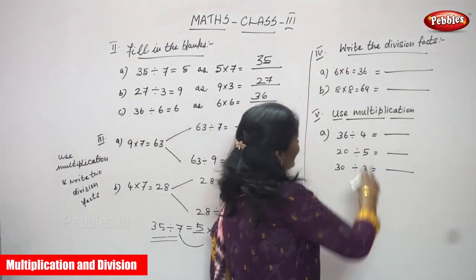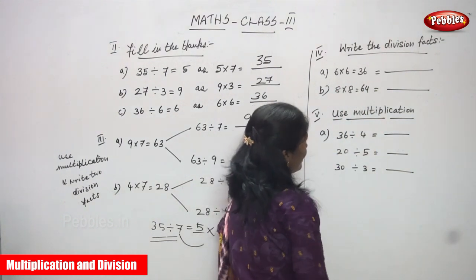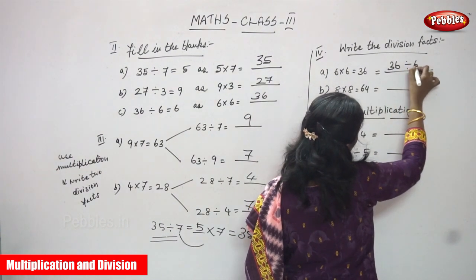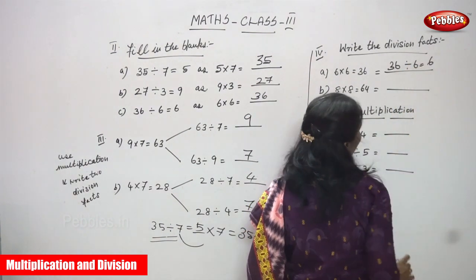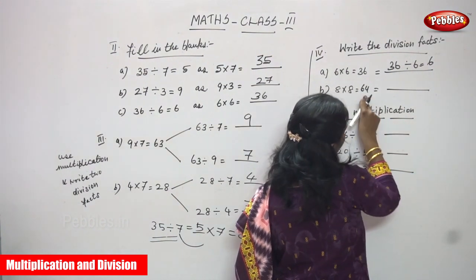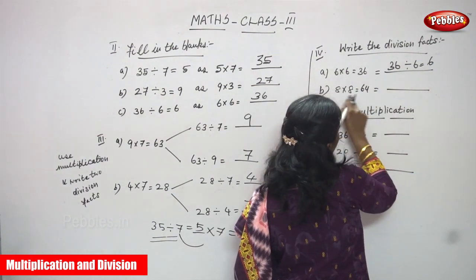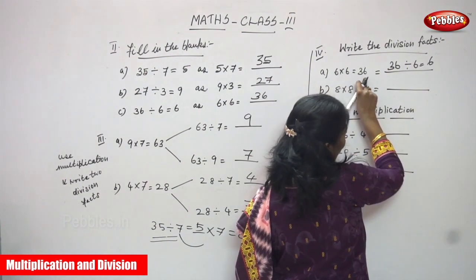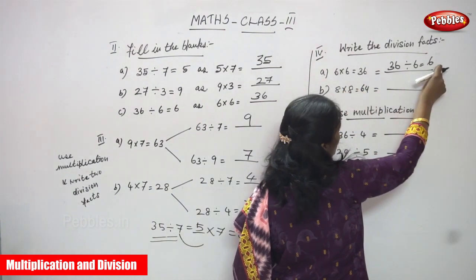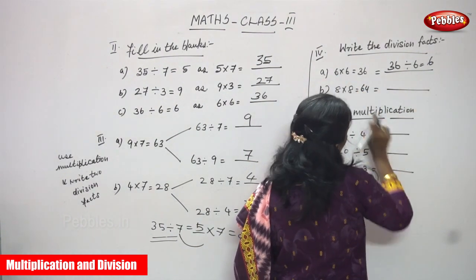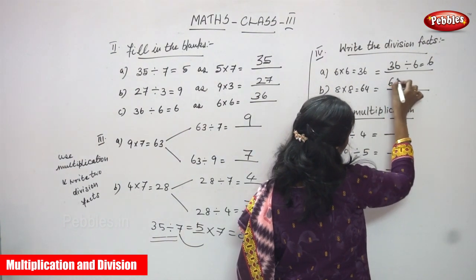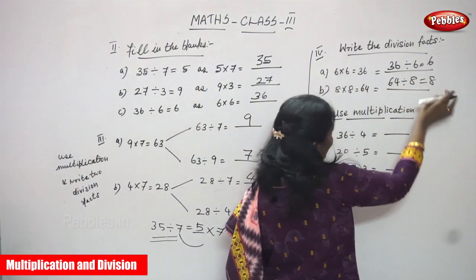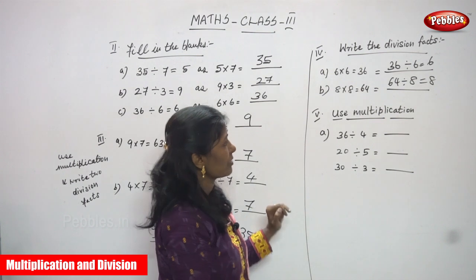Fourth Roman number: write the division facts. 6 into 6 is 36. Division facts means: 36 is divided by 6, what is the answer? 6. That is a division fact. 6 into 6 — these two are factors and 36 is the product. So 36 divided by 6, the answer is 6. Now 8 into 8 is 64. Product 64: 64 divided by 8, you get 8.